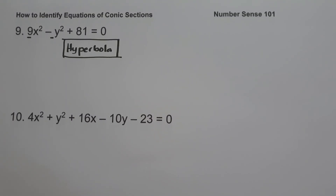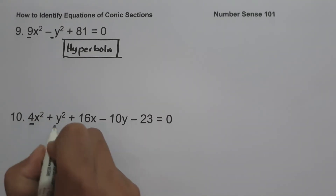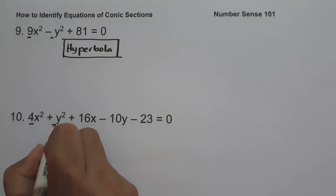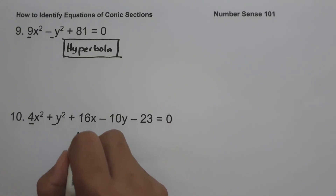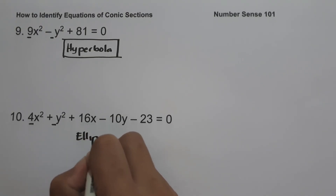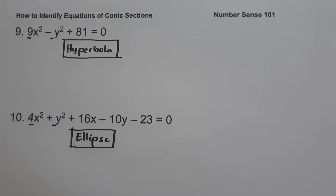On our last example, we have 4x² + y² + 16x − 10y − 23 = 0. Since the coefficient of x² is not equal to the coefficient of y² but they have the same sign, we can say that this equation is an ellipse. So I hope you've learned from this video. Thank you so much for watching and God bless you all.